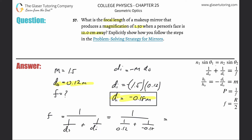Plug that all into the calculator — do the denominator first: 1 divided by 0.12 minus 1 divided by 0.18, then 1 divided by that value of 2.77, and we get an answer of 0.36 meters. If you need that in centimeters, just move the decimal 2 places to the right, so it's 36 centimeters.